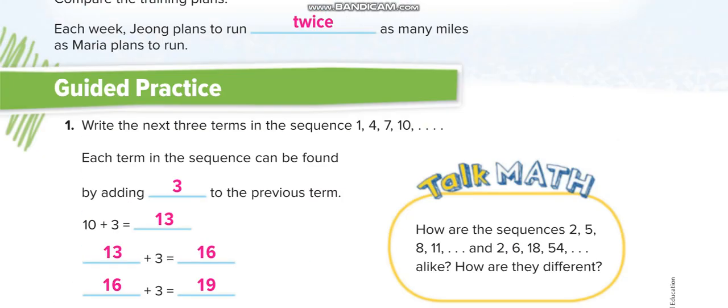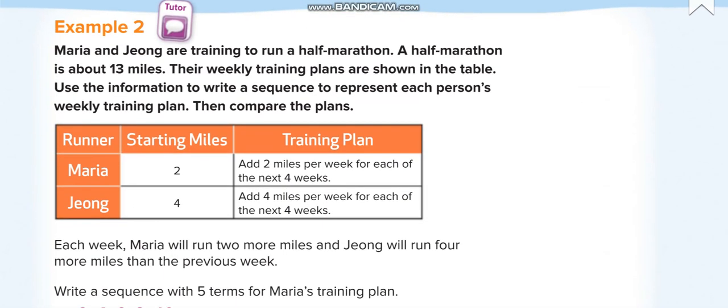Let's move to the next page. Okay, Maria and Jeong are training to run a half-marathon. A half-marathon is about 13 miles. Their weekly training plans are shown in the table. Use the information to write a sequence to represent each person's weekly training plan, then compare the plans.